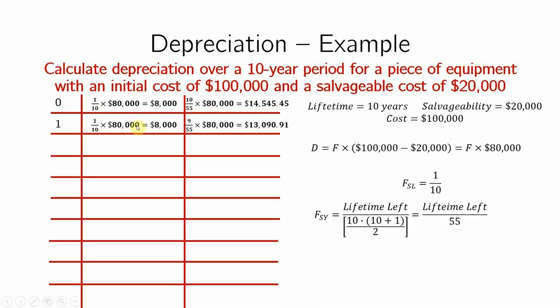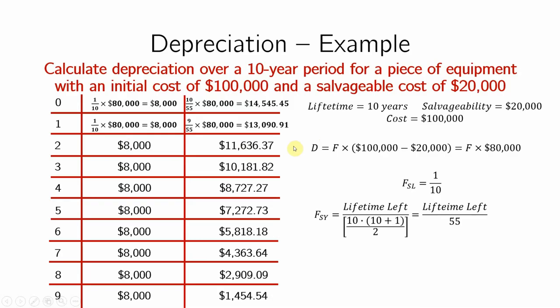For year one, you'll see the straight line is exactly the same. It doesn't change. And for this, it will be 9 now instead of 10, because my lifetime left will be subtracted by a year, and I get that it's about $13,000. And I can go on and so on and so forth, and for year two, it will still be $8,000 for this. Now, it will be a little bit less for the sum of years. And as you can see, for the straight line, it's $8,000 throughout the 10-year operation. And the sum of years, it is subtracted. And it starts high, and it goes low.